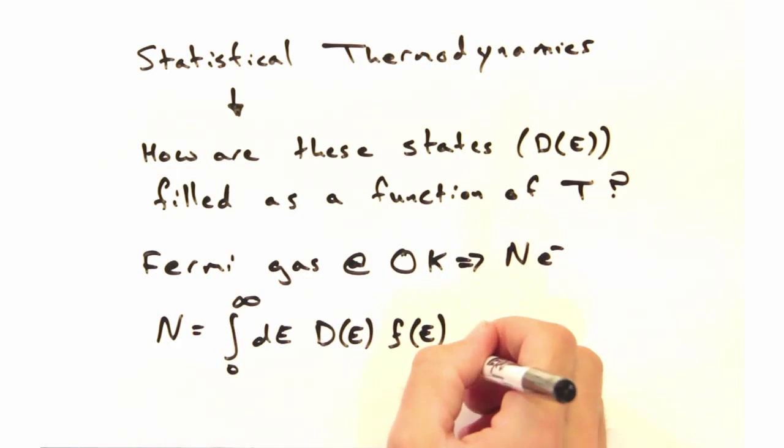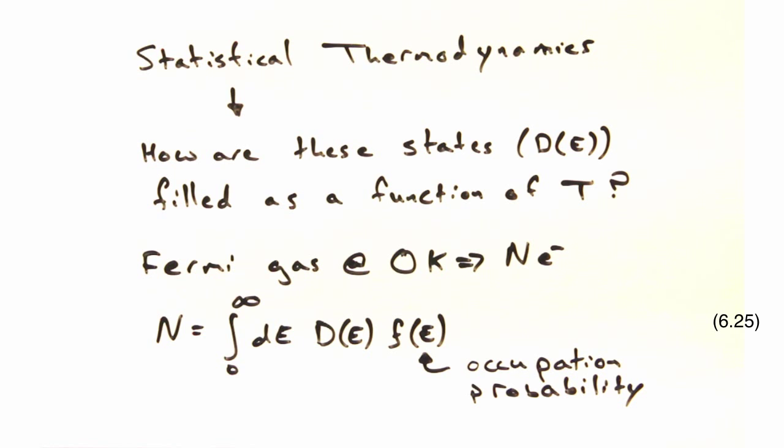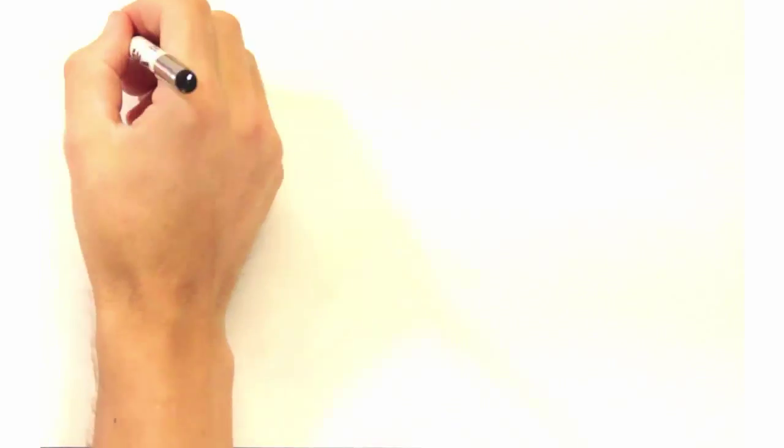Our system will have n electrons, and we can calculate that by integrating over the density of states times this occupation probability. This looks very similar to how we treated phonons.